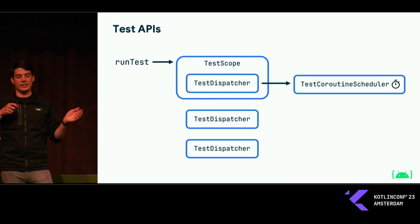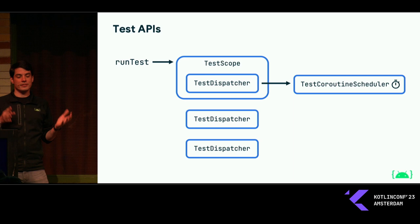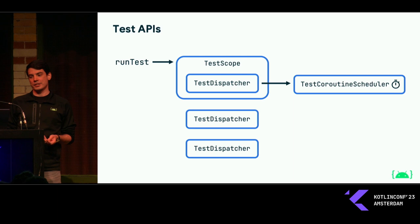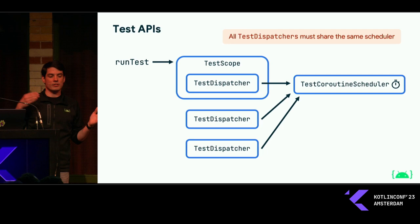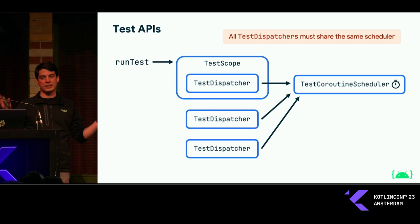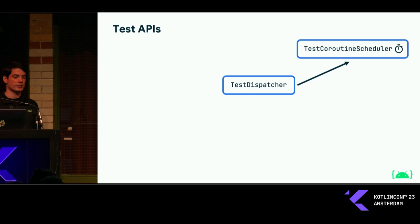While runTest creates a TestScope and that scope creates a TestDispatcher automatically, you can also create additional test dispatchers during your tests as needed. But something extremely important is that all of these test dispatchers must always share the same scheduler. Make sure that as you're instantiating new dispatchers, you only have a single scheduler instance within the entire test.